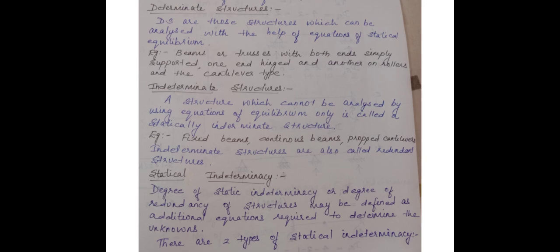What are Determinate Structures? Determinate Structures are those which can be analyzed with the help of equilibrium equations. Some examples are beams or trusses with both ends simply supported, or one on hinge and another on rollers, or a cantilever type beam. Indeterminate Structures include fixed beams, continuous beams, and propped cantilevers. Indeterminate Structures are also called redundant structures. Statical Indeterminacy, or Degree of Static Indeterminacy, or Degree of Redundancy, may be defined as the additional equations required to determine the unknowns.